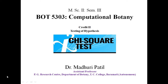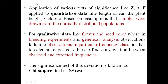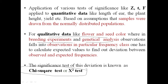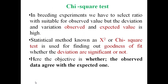Welcome students. In today's lecture on testing of hypothesis, we are going to concentrate on the chi-square test. Before that, let's remind ourselves where we use the chi-square test — when there is qualitative data. Most of the time in breeding and genetical experiments the data is qualitative, so we use the chi-square test. In breeding experiments, we have to select a ratio suitable for the observed value.